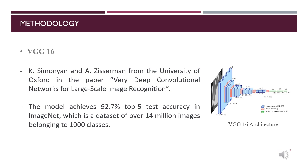We talked in the previous section about the dataset that we chose to train our models. Now, we will talk about the VGG16 used for feature extraction of the images. In other words, it is the model which allows transforming an image into a single vector. The VGG16 is a convolutional network that consists of three fully connected layers and 13 convolutional layers, pre-trained on the ImageNet dataset, which is a dataset of over 14 million images belonging to 1000 classes. It is proposed by Simonyan and Zisserman from the University of Oxford in the paper Very Deep Convolutional Network for Large-Scale Image Recognition. The model achieves 92.7% top-five accuracy on ImageNet.